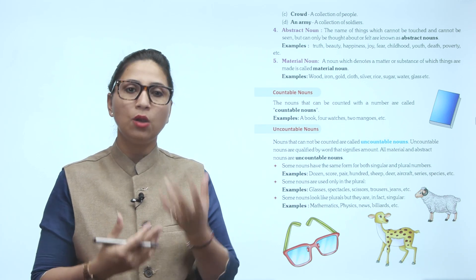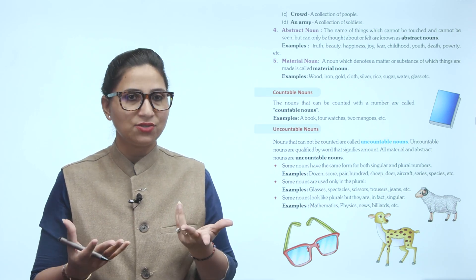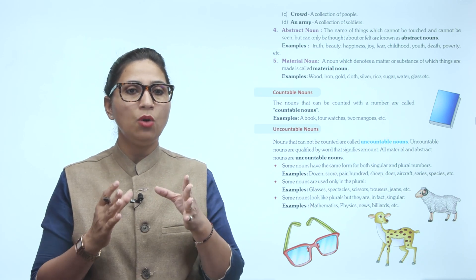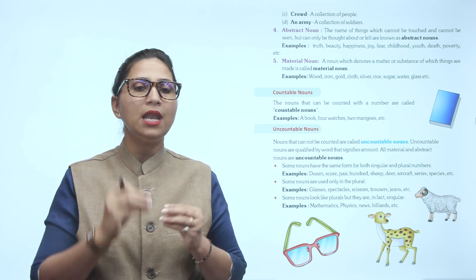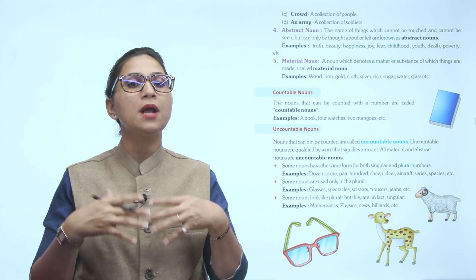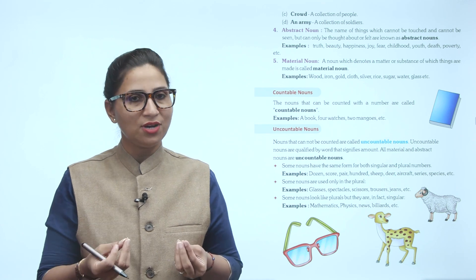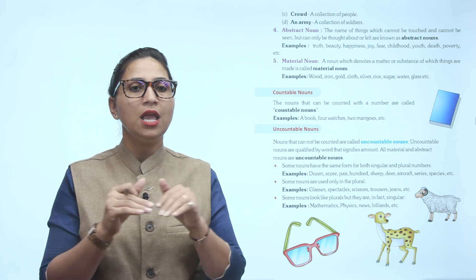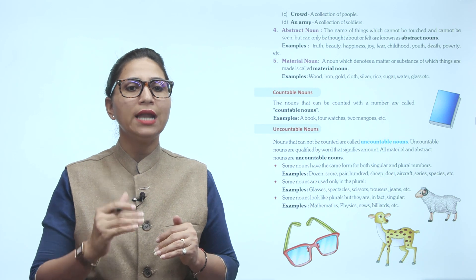Now, countable nouns and uncountable nouns. Countable nouns are nouns that can be counted with a number, like a book, four watches, two mangoes. You can count books, watches, mangoes, so we include them in countable nouns.